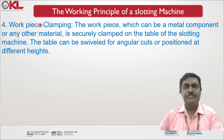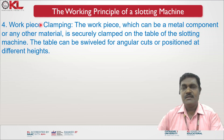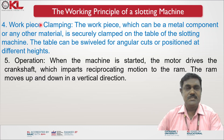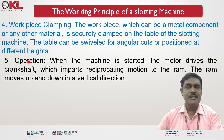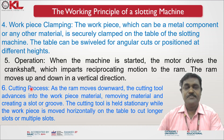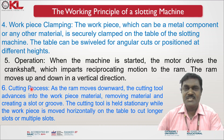The work piece — which can be a metal component or any other material — is securely clamped on the table of the slotting machine. The table can be swiveled for angular cuts or positioned at different heights. When the machine is started, the motor drives the crankshaft, which imparts reciprocating motion to the RAM through the Whitworth quick return mechanism, and the RAM moves up and down in a vertical direction. As the RAM moves downward, the cutting tool advances into the work piece material, removing material and creating a slot or groove. The cutting tool is held stationary while the work piece is moved horizontally on the table to cut longer slots or multiple slots.